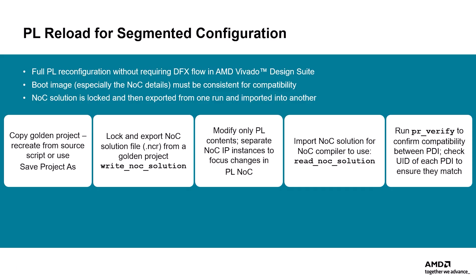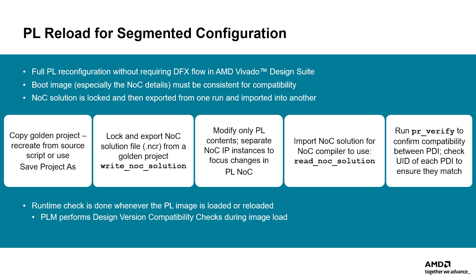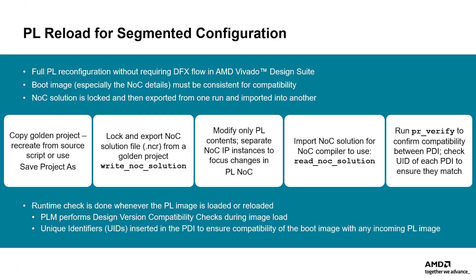This must be done directly in the Tcl console to identify the two routed checkpoints to compare. In addition to checks within the Vivado flow, a runtime check is done whenever the PL image is loaded or reloaded onto the target device. The PLM performs design version compatibility checks during image load. Unique identifiers are inserted in the PDI to ensure compatibility of the boot image with any incoming PL image. The Vivado IDE calculates 32-bit hash values for each partition and inserts these in the PDI.